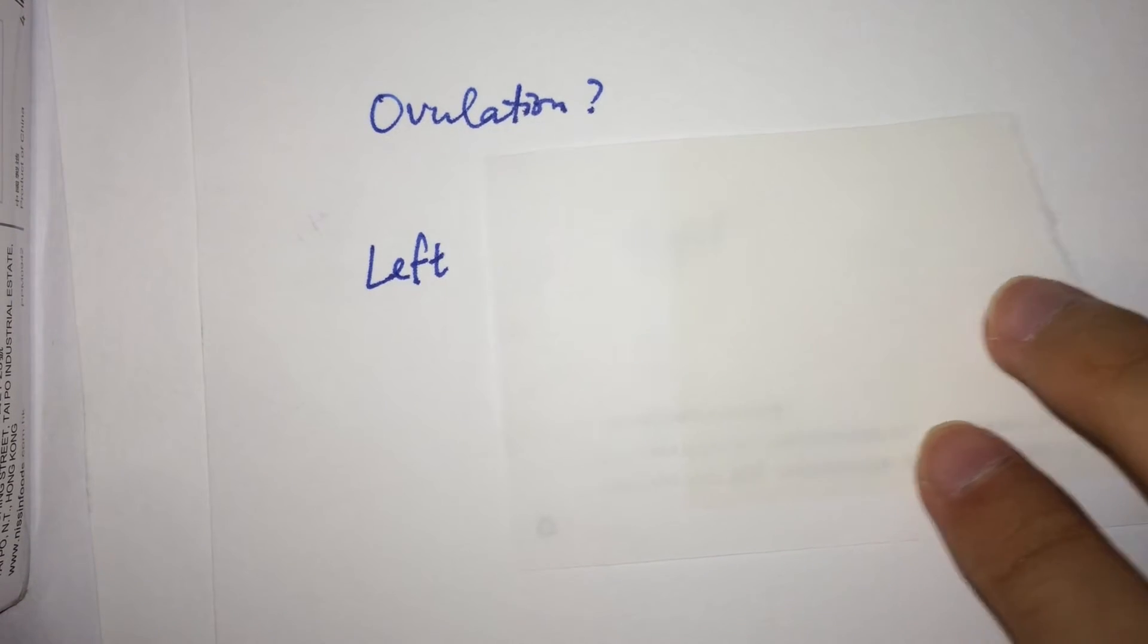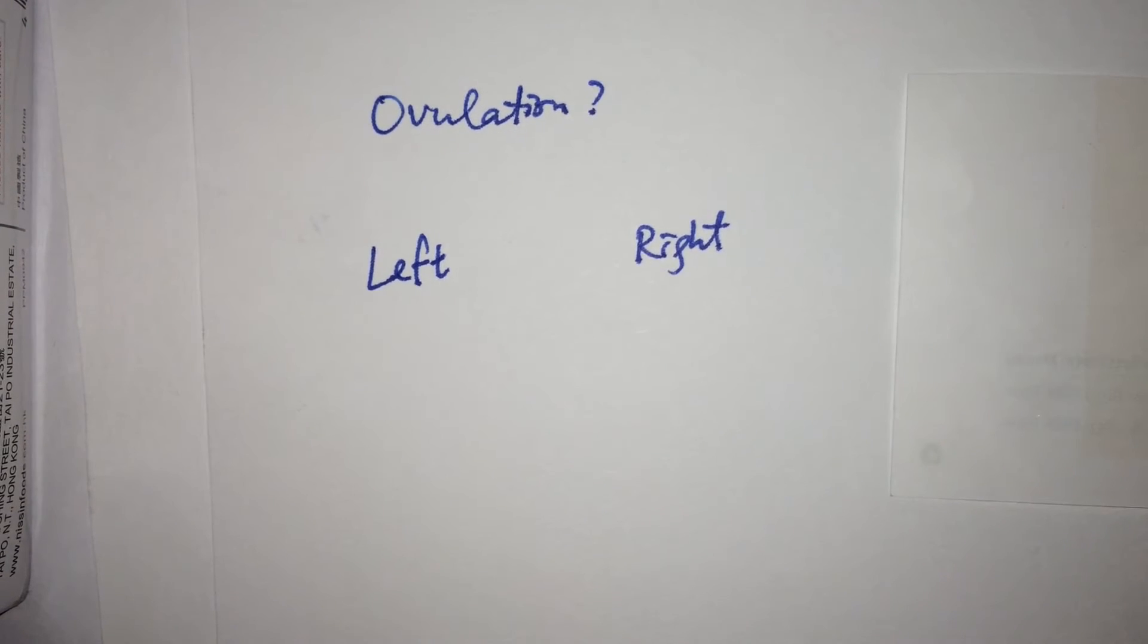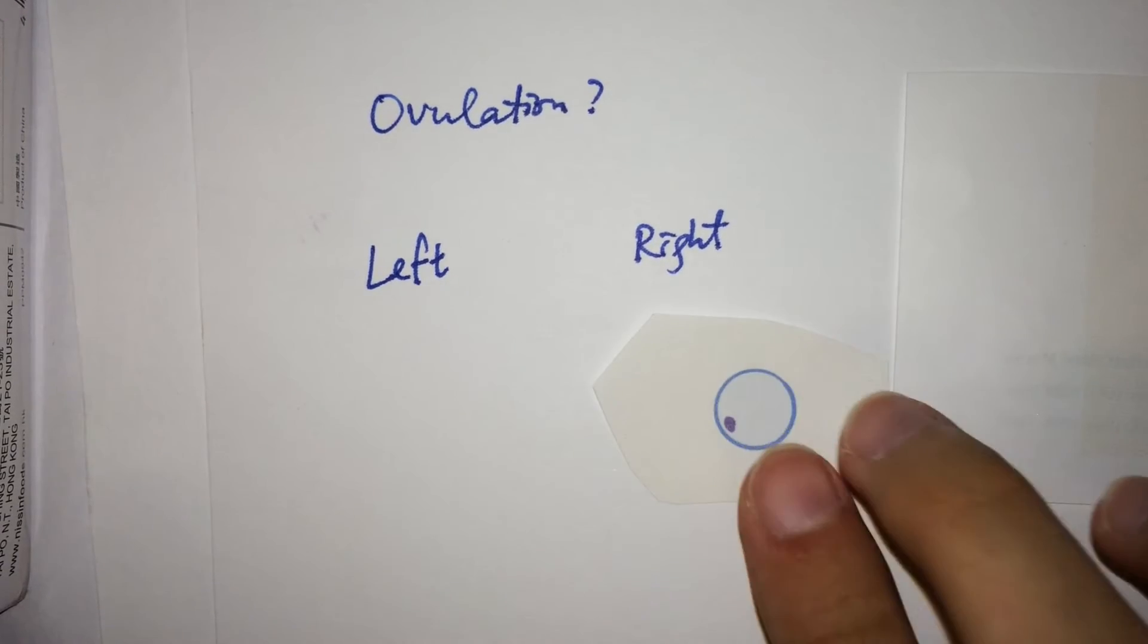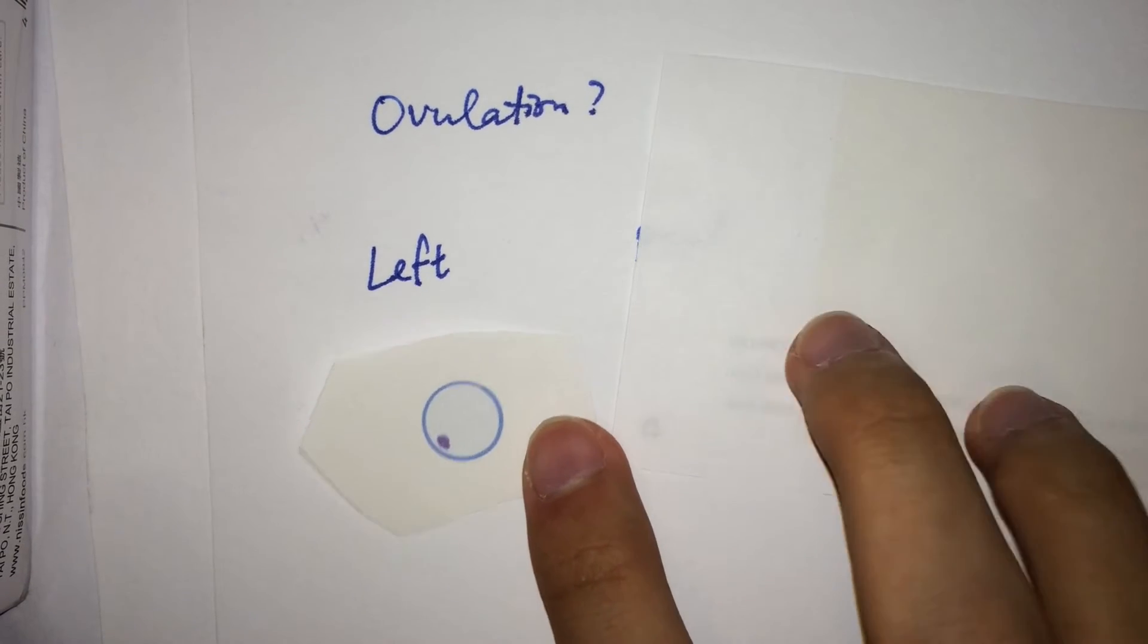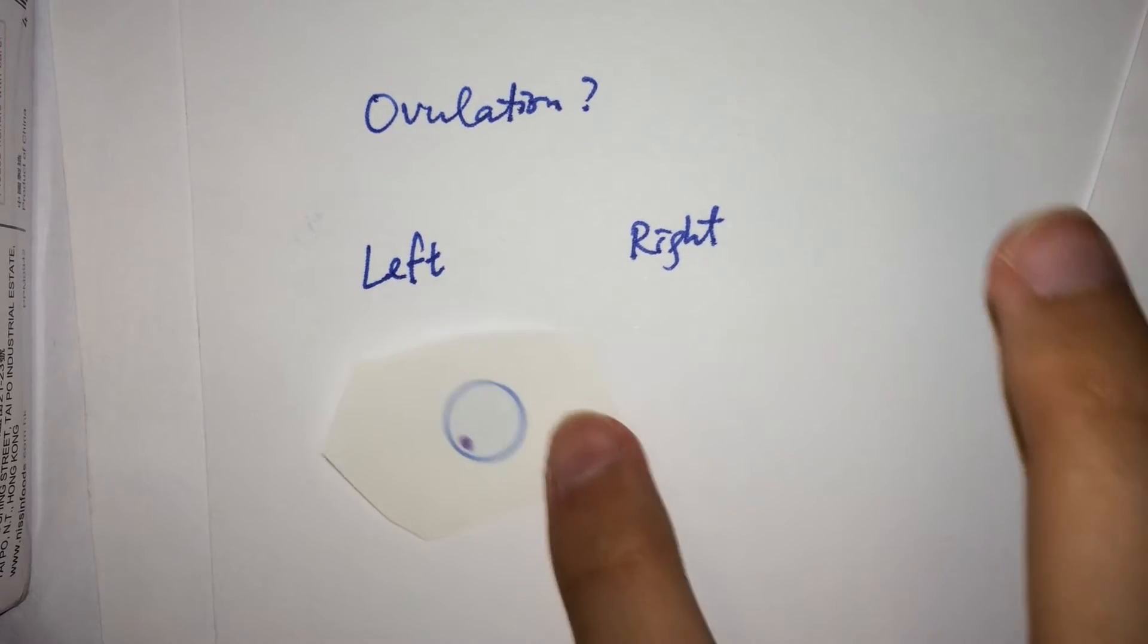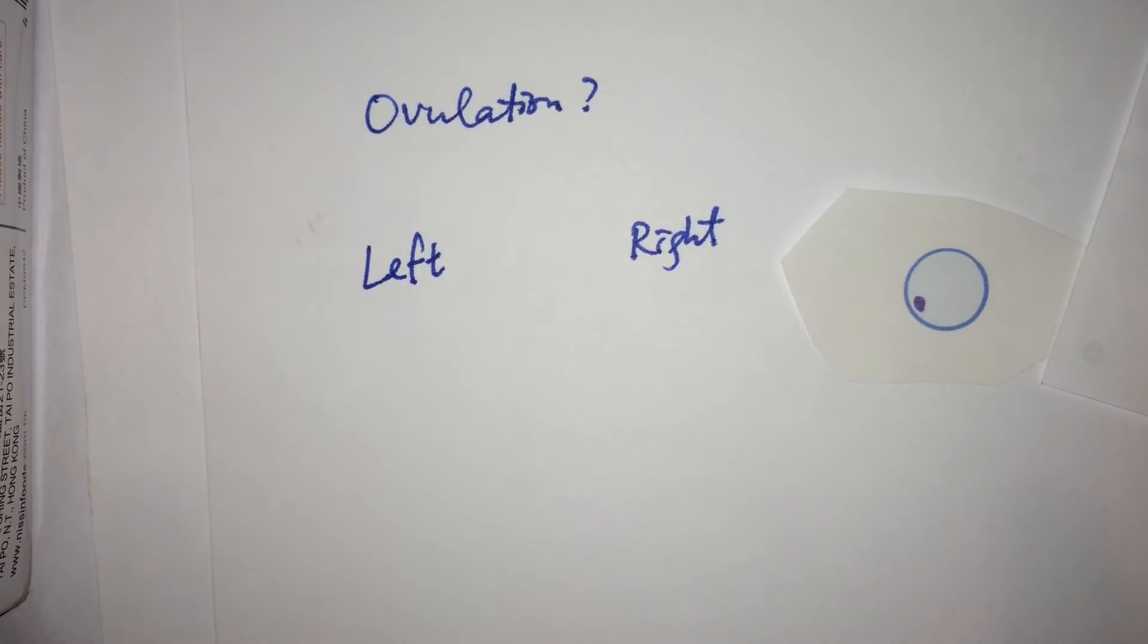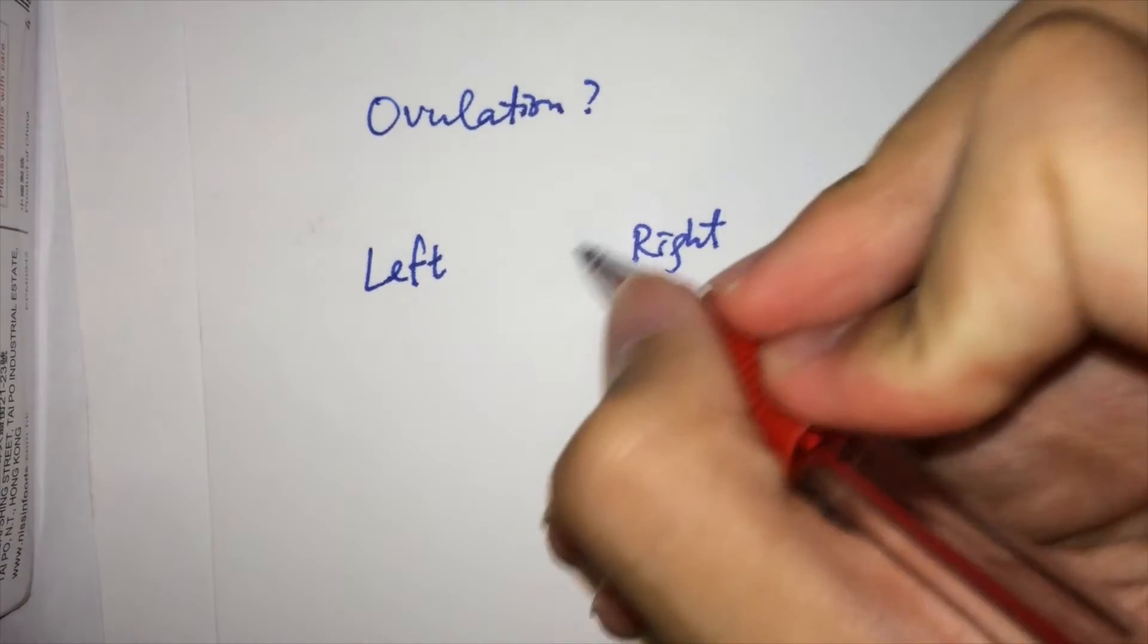So how about ovulation? Well, you would still get one egg per month, just like a normal female does. Common belief would think that ovaries take turns producing eggs, which makes one ovary produce one egg per two menstruation cycles. But that's completely wrong.